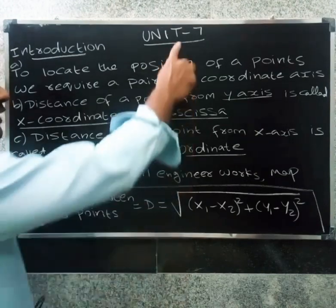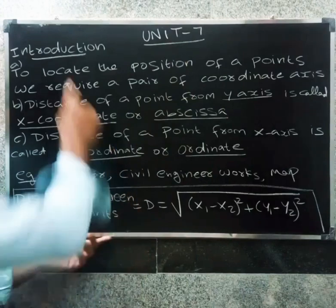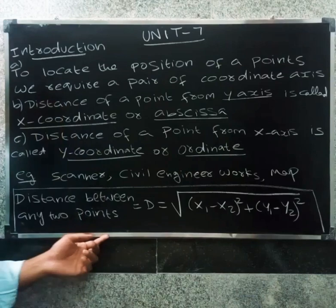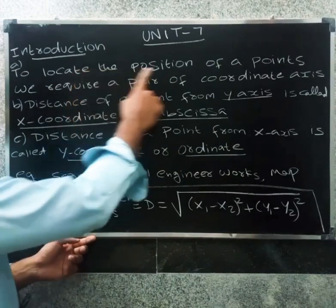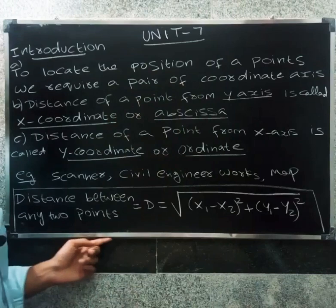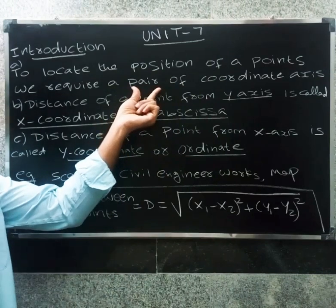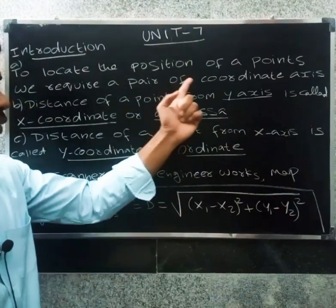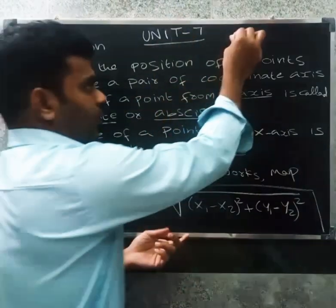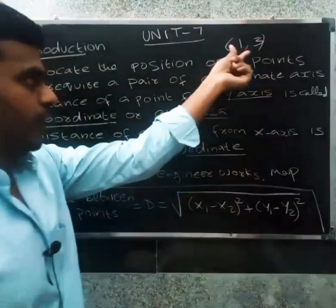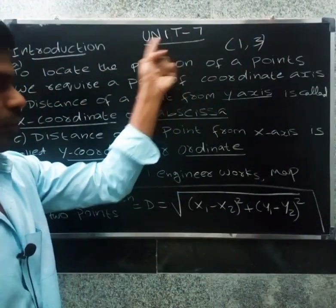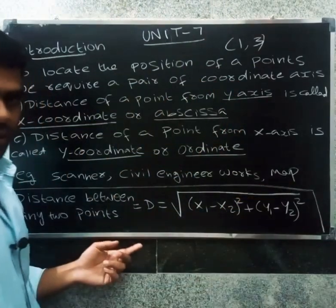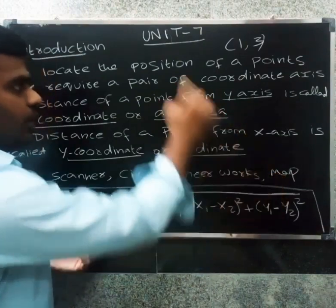Welcome friends. This unit is about coordinate geometry. In coordinate geometry, to look at the position of points, we require a pair of coordinate axes. The position of a particular point — for example, a point like (3, something) — is located on the coordinate axis. So coordinate geometry is used to find the location of points on the coordinate axis.